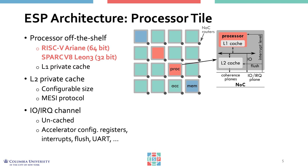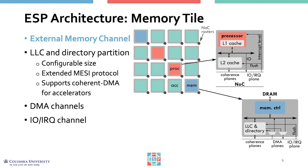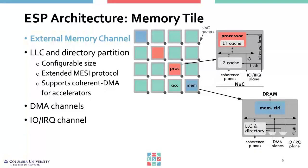The memory tile contains interrupt requests and IO channels used to manage accelerators, and serves as the gateway to DRAM. The number of memory tiles in an ESP system varies between one and four depending on the target application and SOC size. When there are multiple memory tiles, the addressable memory space is partitioned, the last-level cache is partitioned, and so is the directory used to control the cache — all automatically and transparently to software. The memory tiles also contain DMA channels and IO and interrupt request channels.